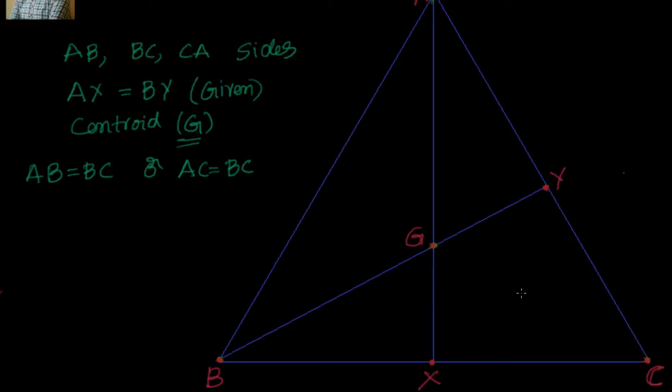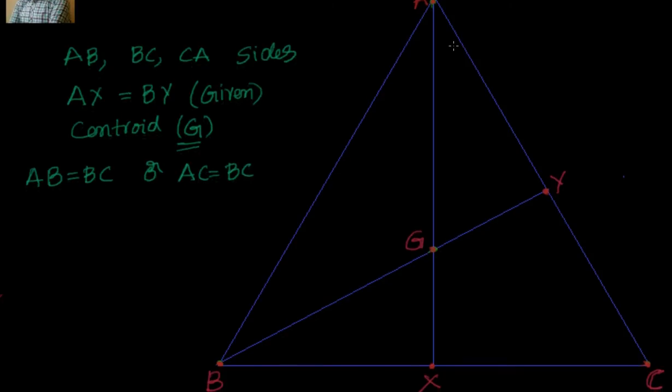So we have taken the triangle ABC. We have taken two medians AX. Now what's the definition of median? Median line segment joining the vertex to the opposite side. It divides that into two equal parts. So can I say BX is equal to XC? So I will say BX is equal to XC.